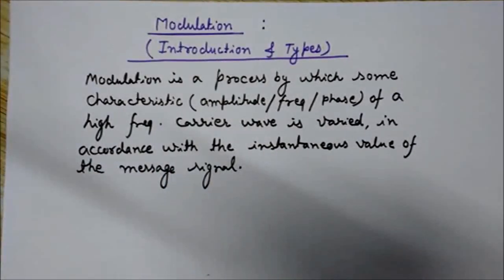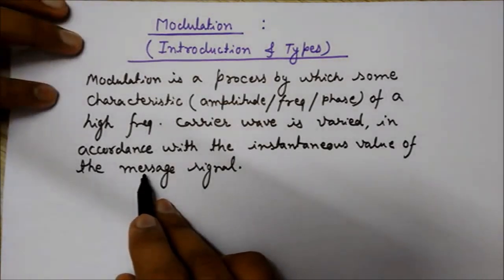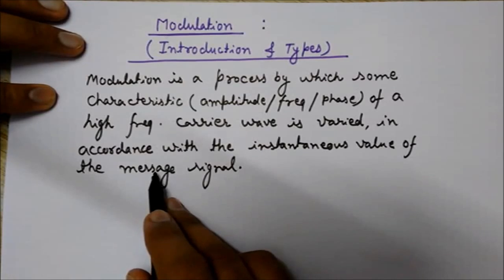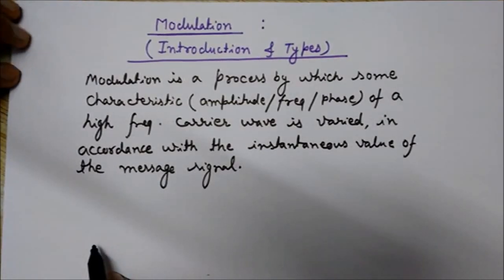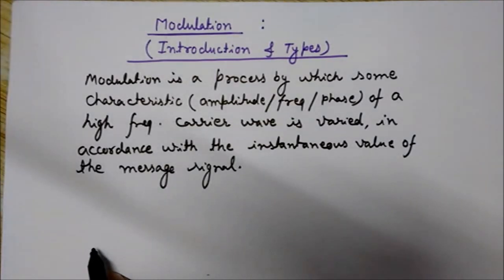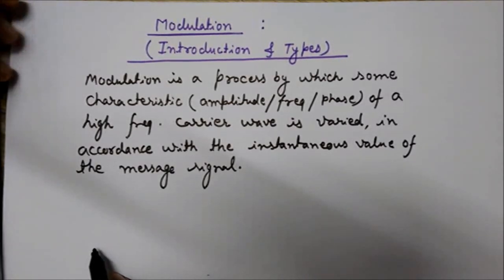The signal containing the message is called the modulating signal or the baseband signal. The signal which has a message you can call it as either baseband signal or the modulating signal. The frequency of the carrier wave is higher than the frequency of the modulating signal.